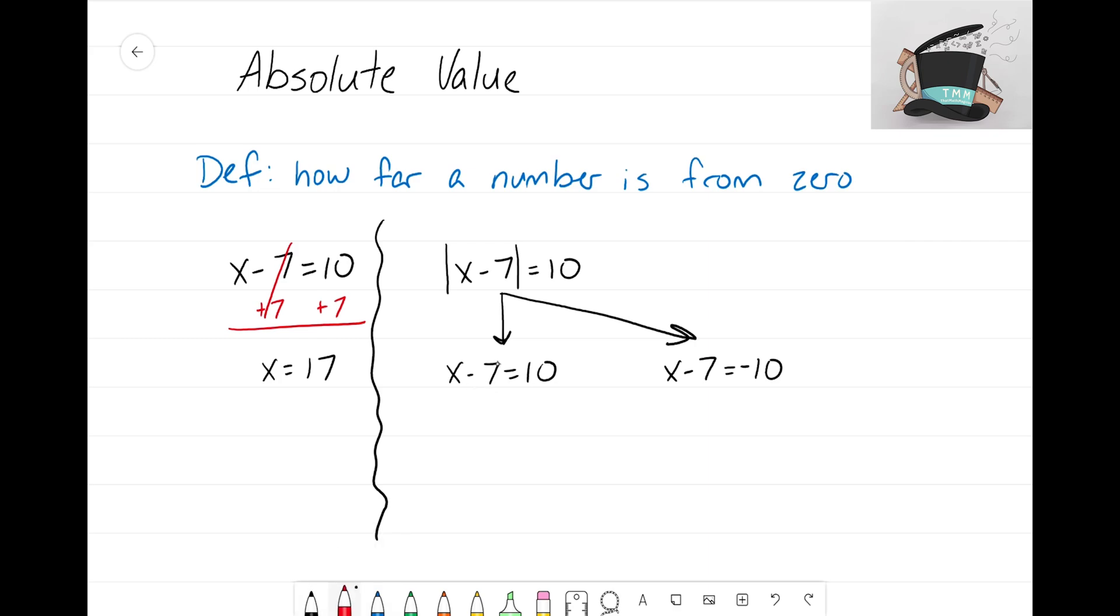So now we just have to solve both of them. So again, I'm going to solve this one just like I did over here. I'm going to add seven, those zero out, and we know that x equals 17, just like the last problem. But when you have an absolute value equation, you always end up with two different answers. Not always, but majority of the time you end up with two answers.